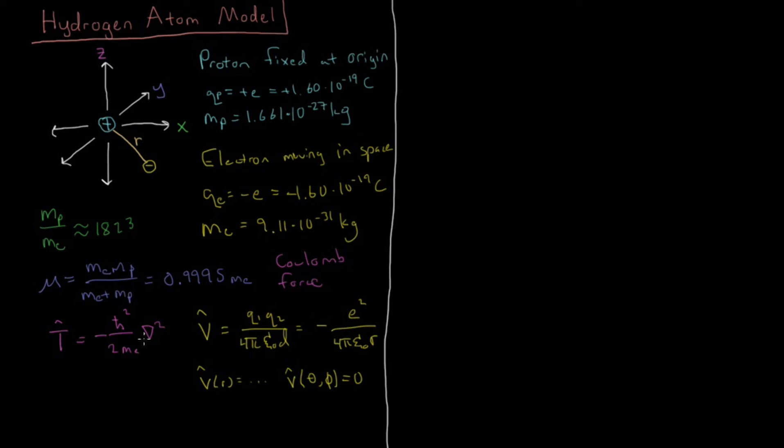So, in order to do that, we need our Laplacian in spherical polar coordinates, and that becomes quite a large, gaudy operator, which we'll write down right now. So, del squared equals 1 over r squared, partial with respect to r, of the quantity r squared, partial with respect to r. Again, note the order of operations here.